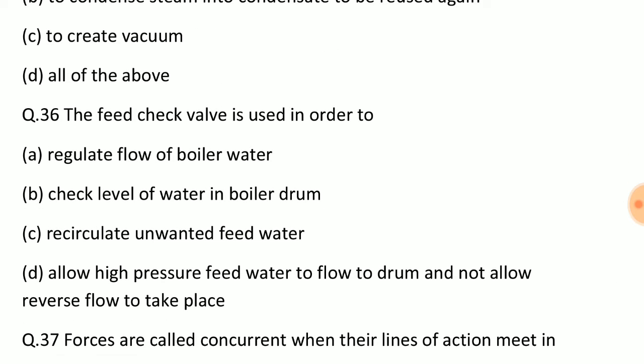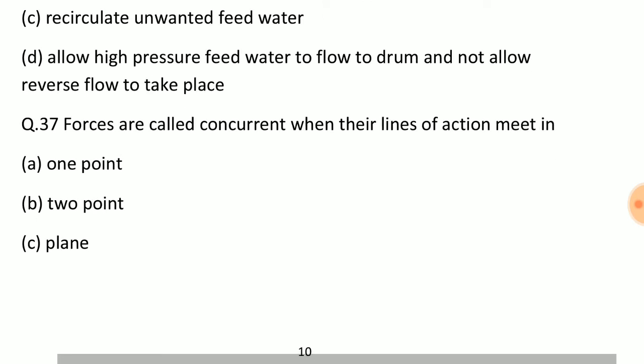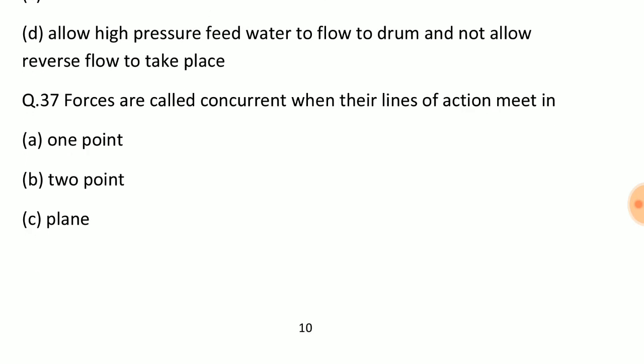Question: The feed check valve is used in order to? Answer: Option D, allow high pressure feed water to flow to drum and not allow reverse flow to take place. Question: Forces are called concurrent when their lines of action meet in? Answer: Option A, one point.